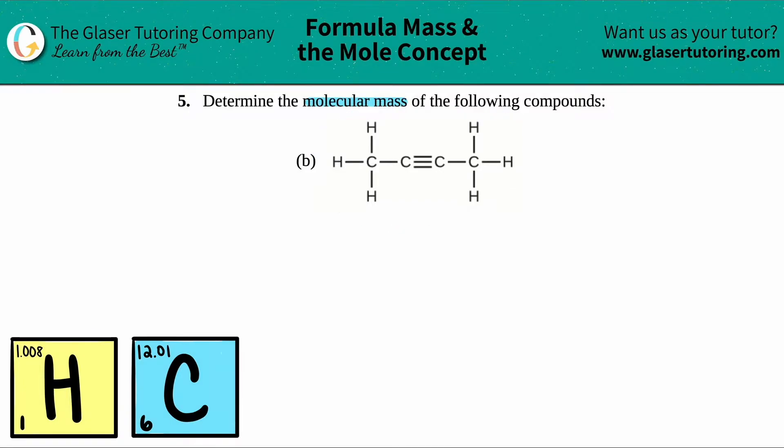But basically, what it breaks down to is I only see two different types of elements here. I see a bunch of carbons, maybe I'll make that circle bigger. I see a bunch of C's, aka carbons, and I see a bunch of H's. I see an H over here, an H over here, H over here.